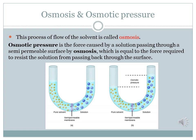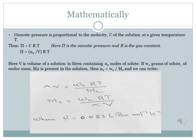After equilibrium is reached, the flow stops. However, we can stop it before equilibrium by applying an external pressure. That external pressure applied to stop the flow of solvent is called the osmotic pressure of the solution. Unlike K_B and K_F which are proportional to molality, osmotic pressure is proportional to the molarity C of the solution at a given temperature T.